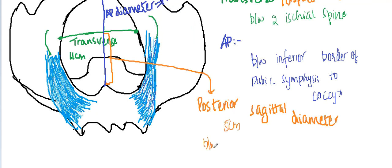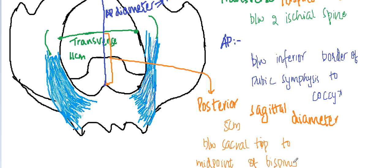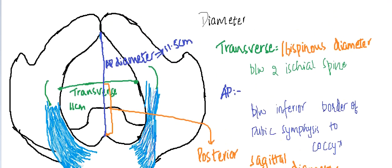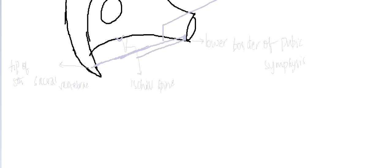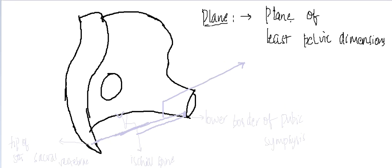The posterior sagittal diameter, 5 centimeters, runs from the sacral tip to the midpoint of the bispinous diameter. These are the diameters of the pelvic outlet.